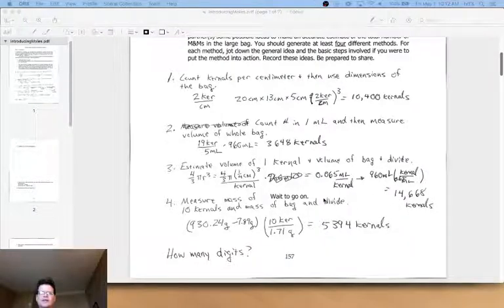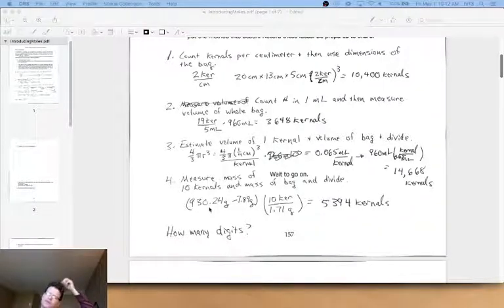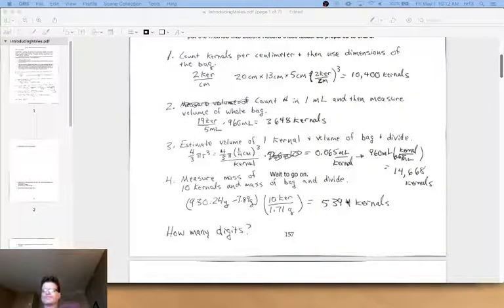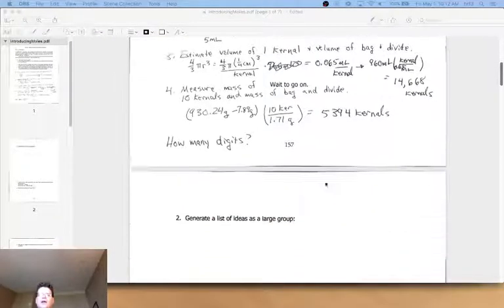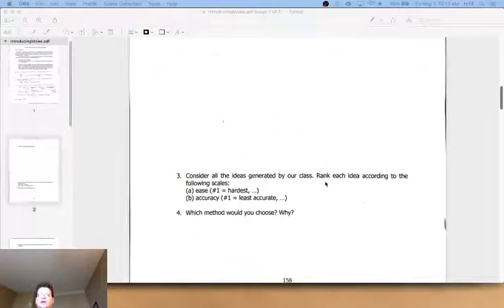10,000, 3,000, 14,000, and with the mass I had the mass of the bag subtracted from the mass of the bag with the kernels in it, and then times 10 kernels was 1.71 grams and I got 5,000 there. So kind of in the middle.